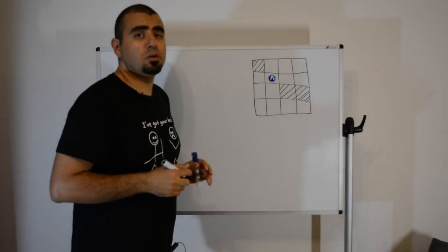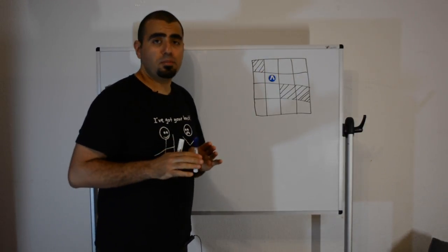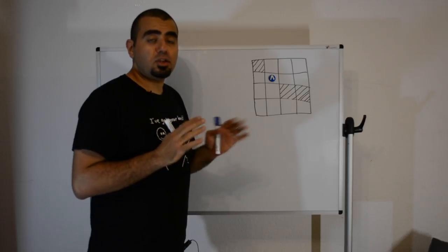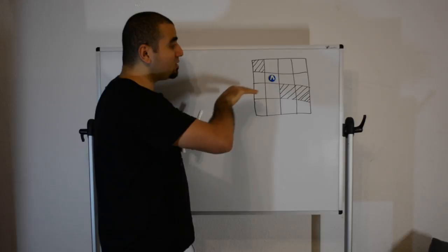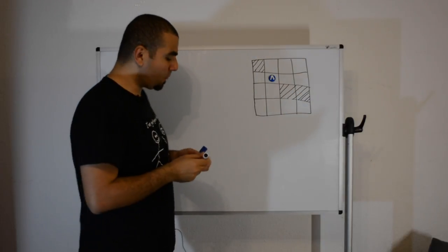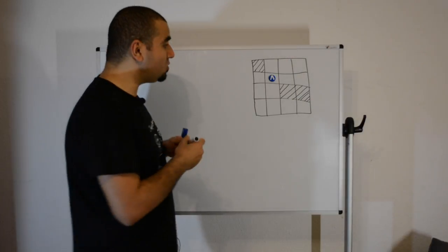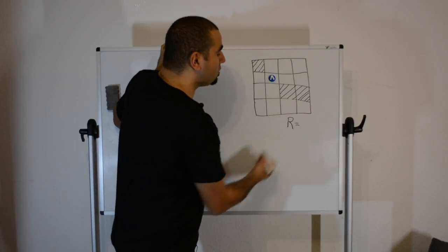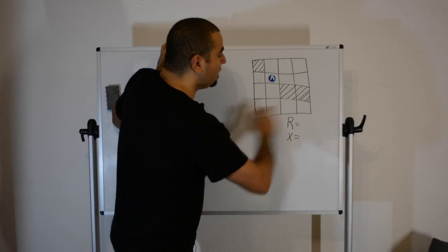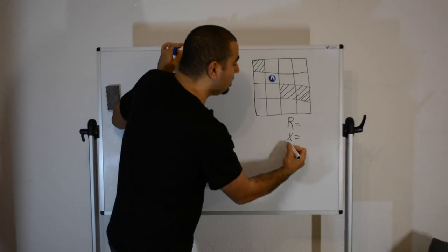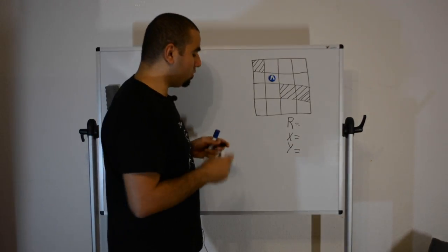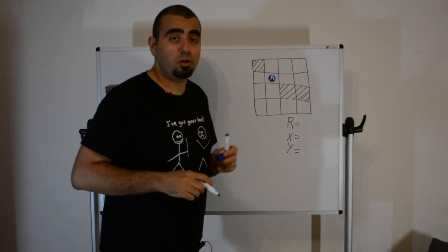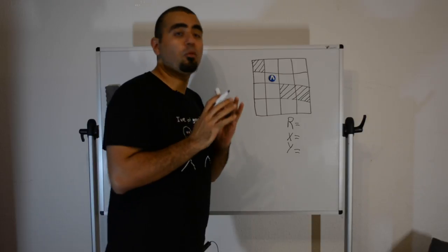To clean the room, at any given point in time we need to track the robot's position on the x and y axes, as well as its direction — whether it's facing forward, right, left, or down. Let's introduce variables: r for rotation, x for horizontal position, and y for vertical position.